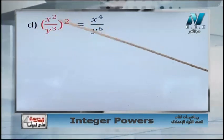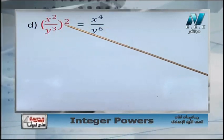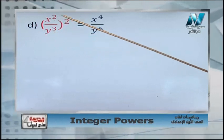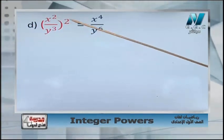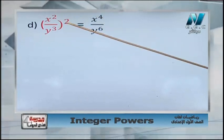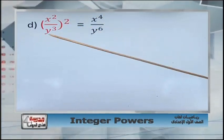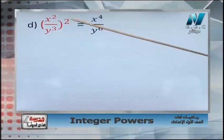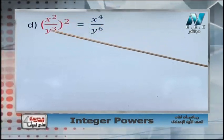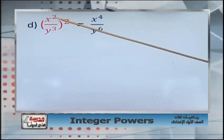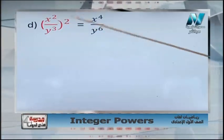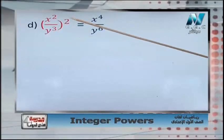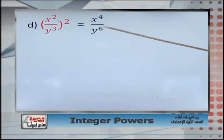Here: x power 2 over y power 3, all to the power 2. Distribute the power over the numerator and denominator. For the numerator: x power 2, all power 2 — power of the power, 2 times 2 equals 4. For the denominator: y power 3, all power 2 — power of the power, 3 times 2 equals 6. So the answer is x power 4 over y power 6.